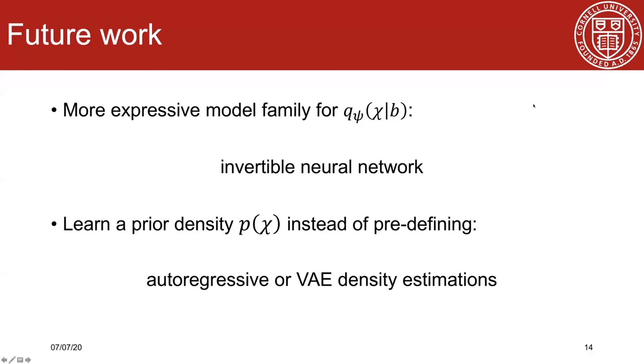Future works include building the parameterized distribution using more expressive model family, such as invertible neural network, since the inversion of the network should be the forward dipole convolution process, which may be useful to regularize the network training. Another thing is to learn the prior density of susceptibility instead of the handcrafted MEDI prior. Deep generative models, such as autoregressive network and variational autoencoder could be useful to achieve that.